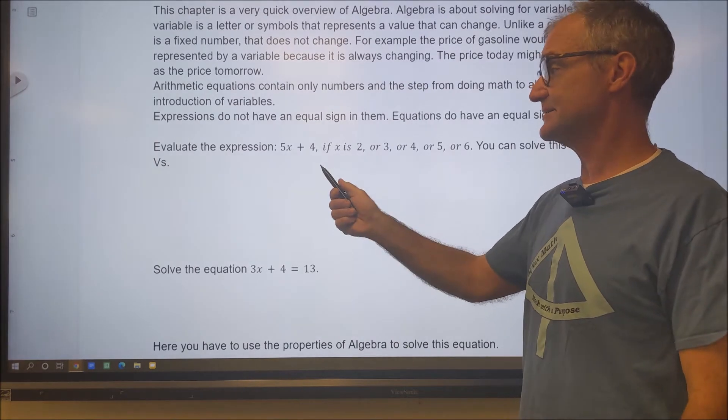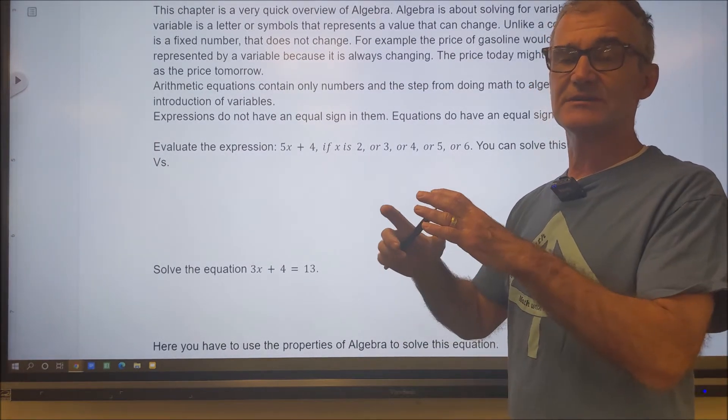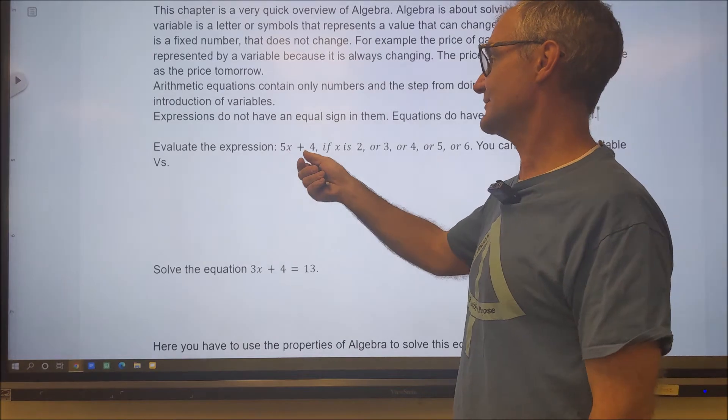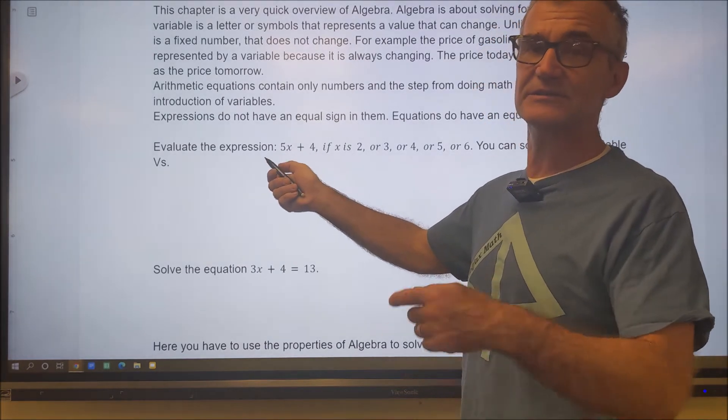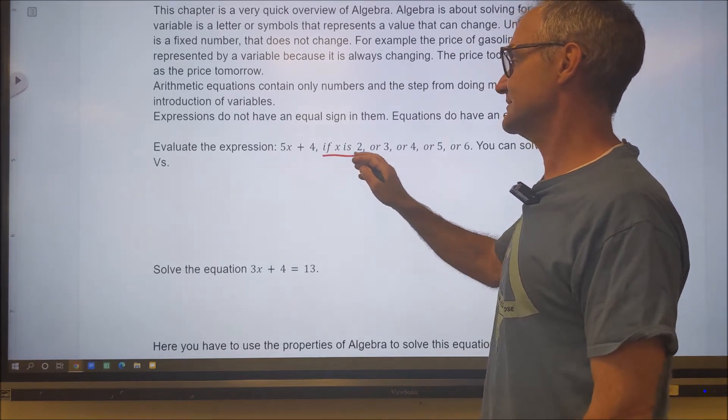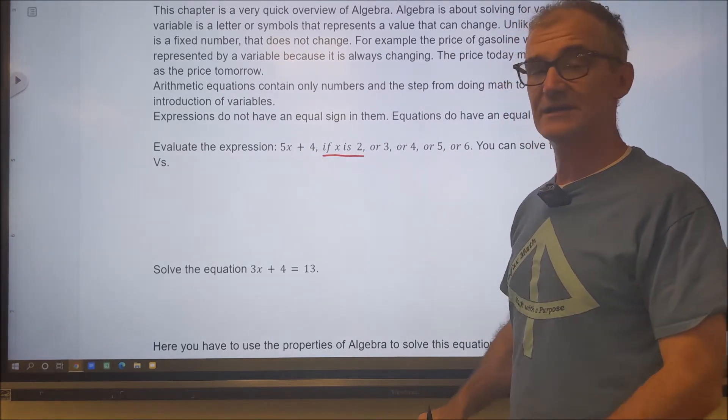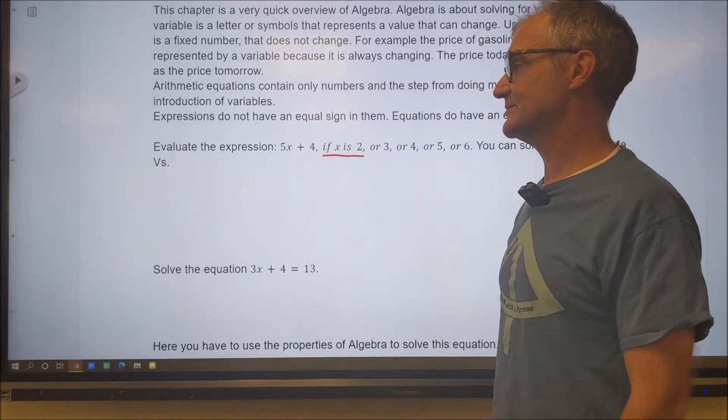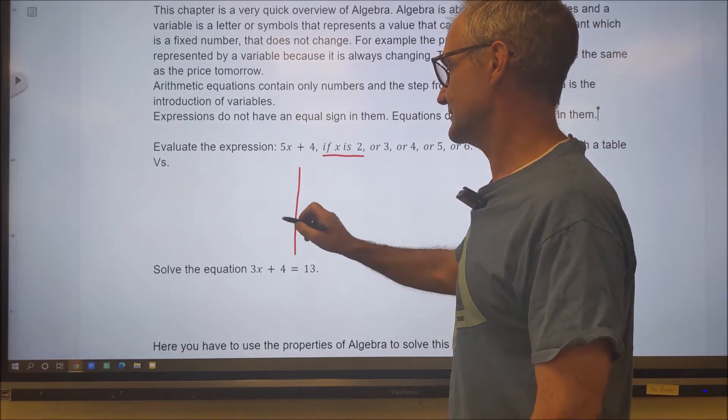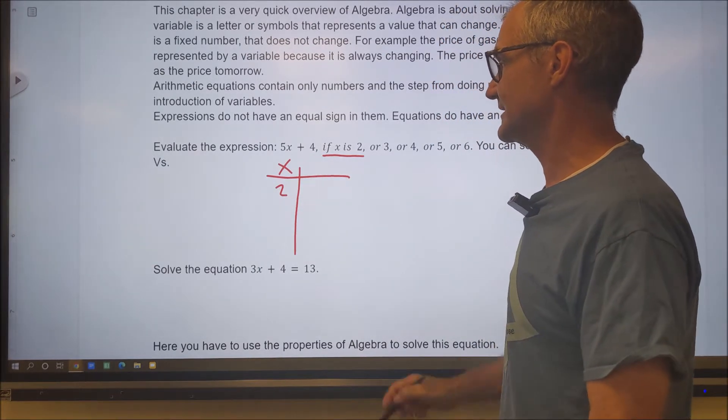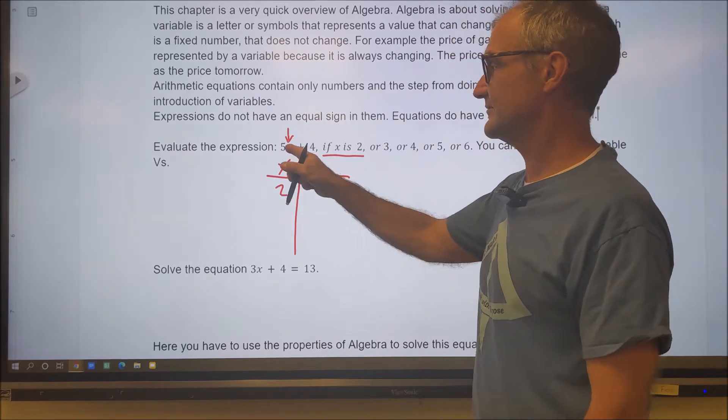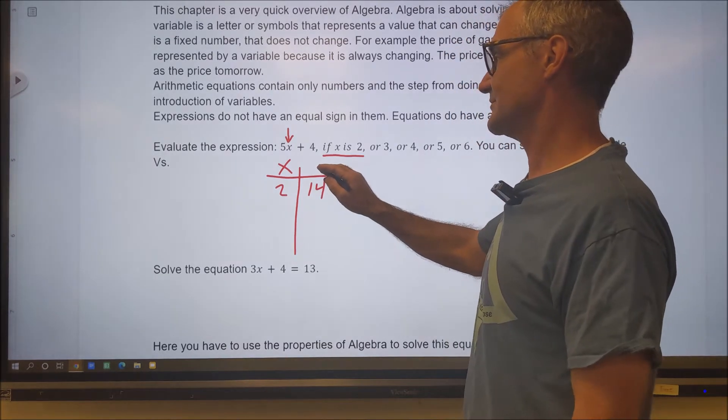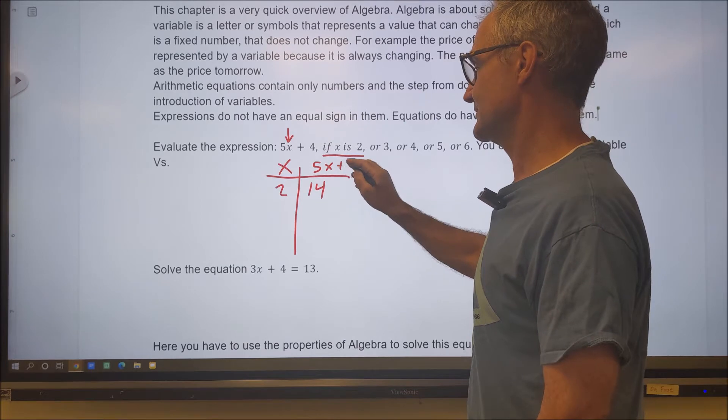So right here, this is an expression, and the expression means there is no equal sign. So you can't really solve anything unless you're given a value for X at a certain time, like of gasoline. So if this is 5X plus 4, there's really nothing to do unless you know a value of X. So here it's saying if X is equal to 2, what is this expression equal to? An equation means it does have an equal sign, and that means I can isolate the variable X and get it by itself.